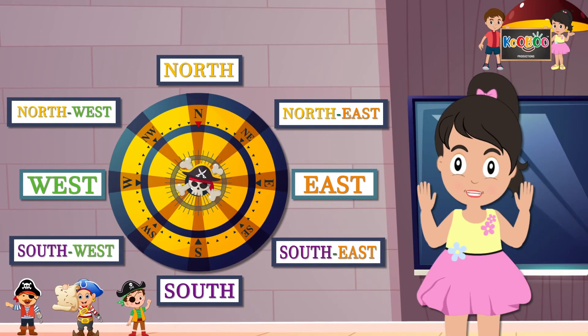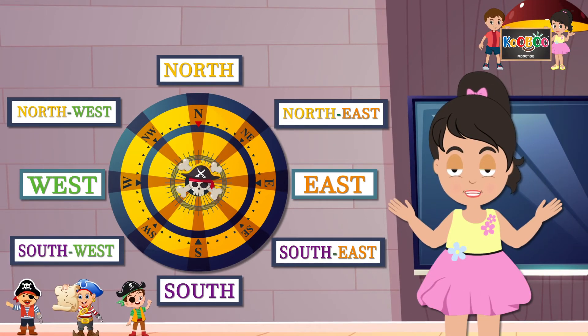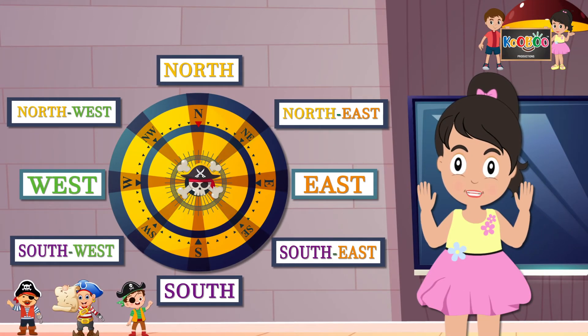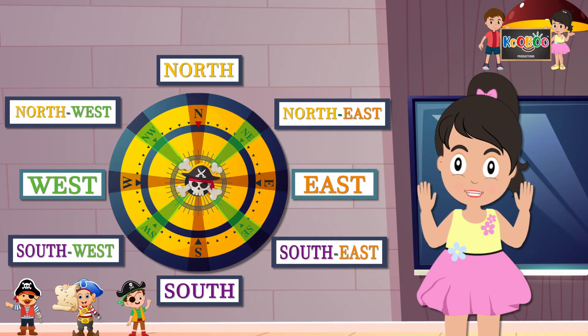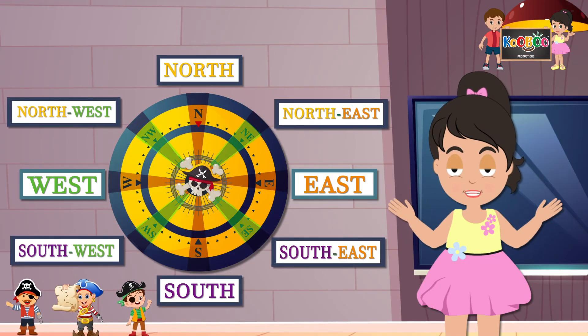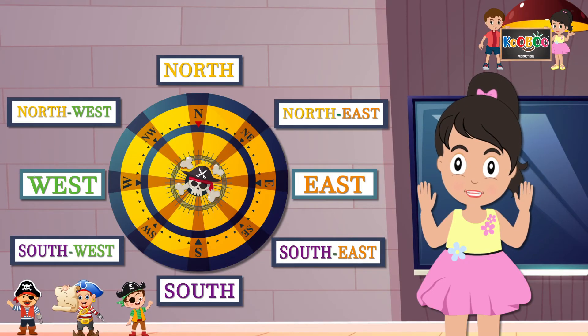So kids, those are the four intermediate directions that we read today.